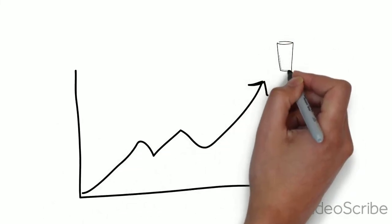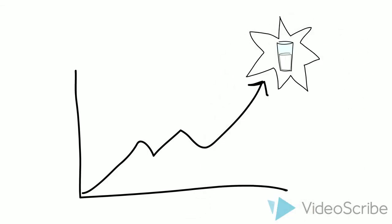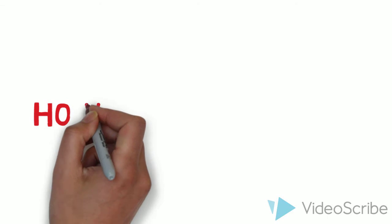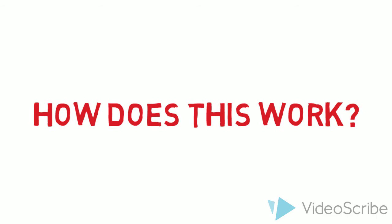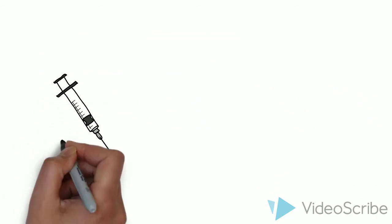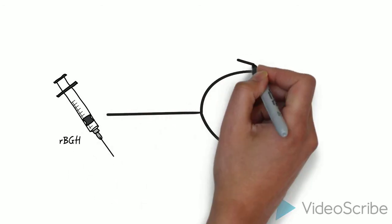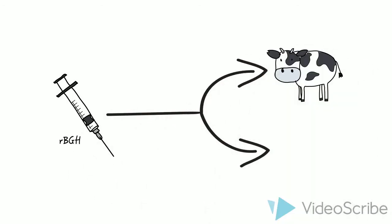How does this work? First, the hormone is implanted behind the ear of a cow or injected into its food.